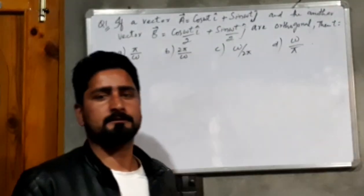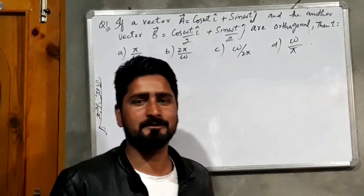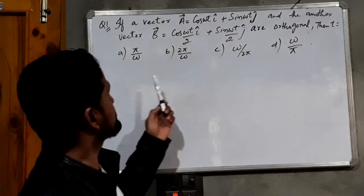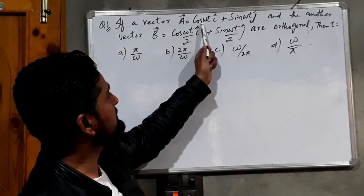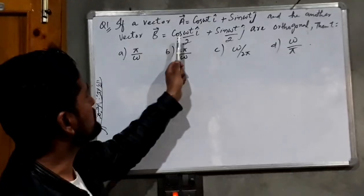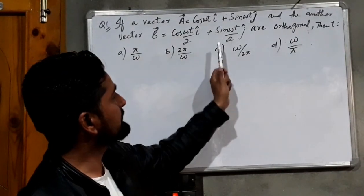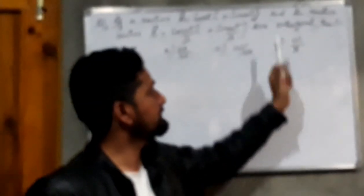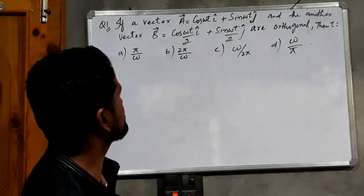Dear students, welcome to our class — welcome to the class of physics, the easiest and finest way to learn concepts of physics. I have written a question on the board: if vector A equals cos(ωt) î + sin(ωt) ĵ and another vector B equals cos(ωt/2) î + sin(ωt/2) ĵ are orthogonal, then the value of t is. The four options are: π/ω, 2π/ω, ω/2π, and ω/π.